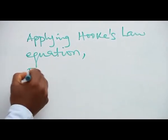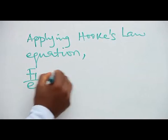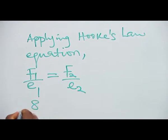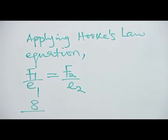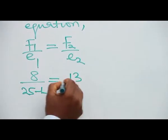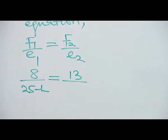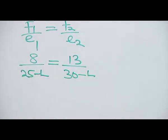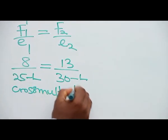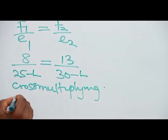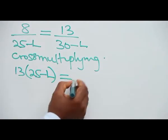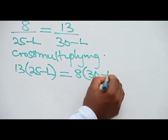We have F1 over E1 is equal to F2 over E2. F1 is 8, E1 is 25 minus L, F2 is 13, E2 is 30 minus the natural length. Cross multiplying, we have 13 into 25 minus L is equal to 8 multiplying 30 minus L.